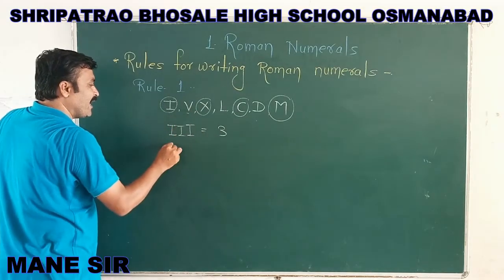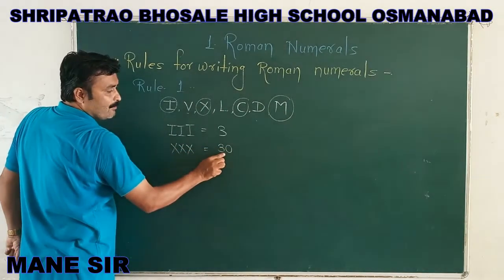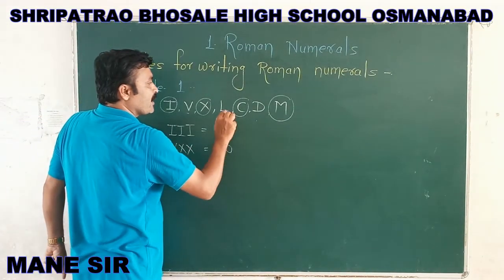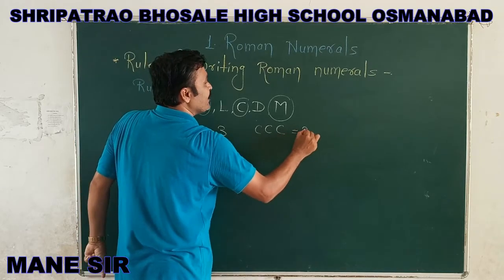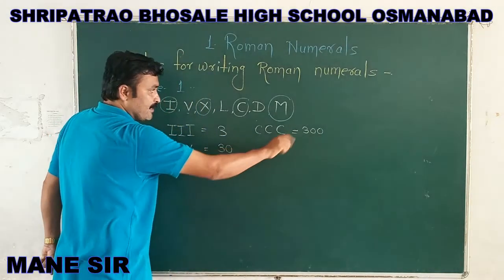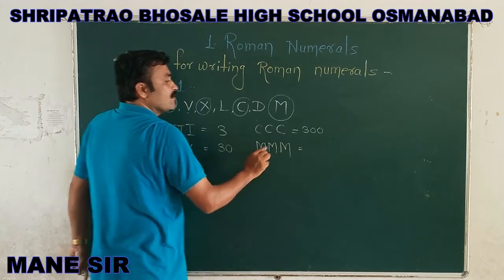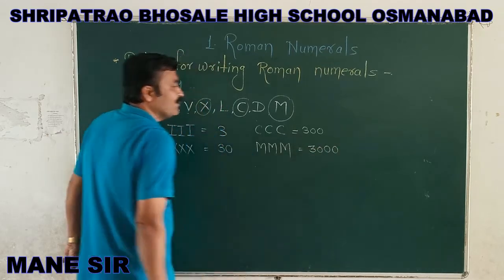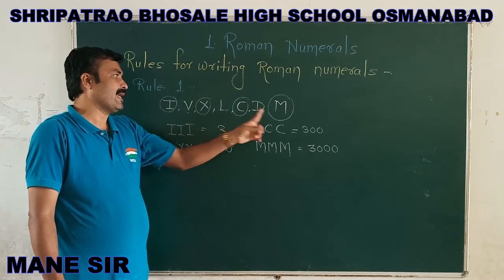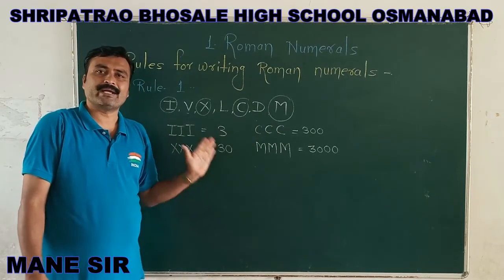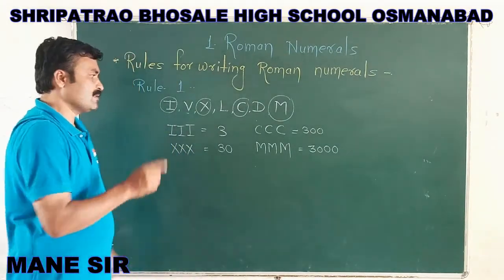If you write capital X three times — X, X, X — it represents international number 30. If you write capital C three times — C, C, C — it represents international number 300. And if you write M three times — M, M, M — this number represents international value 3000. So in Rule 1, capital I, X, C, and M — these 4 basic signs — we can write 3 times maximum continuously. We cannot write these signs more than 3 times continuously.